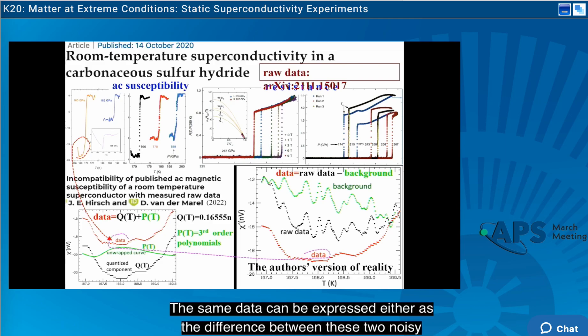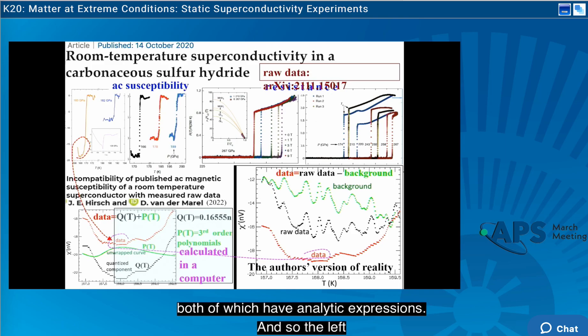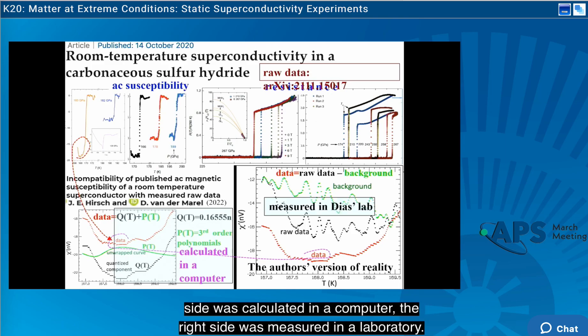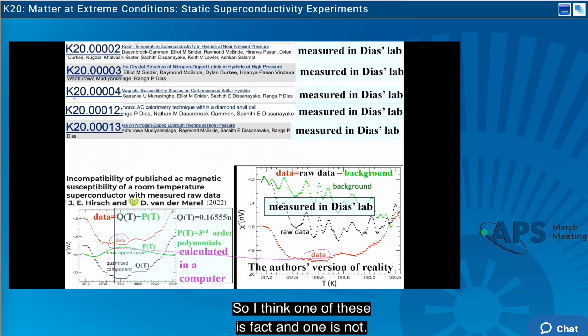The same data can be expressed either as the difference between these two noisy functions or as the sum of this step function and this smooth curve, both of which have analytic expressions. And so the left side was calculated in a computer, the right side was measured in a laboratory. And so I don't believe that there's alternative facts. So I think one of these is fact and one is not.